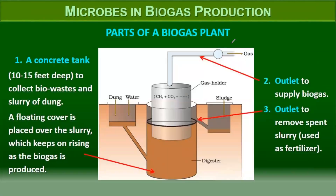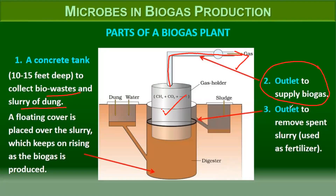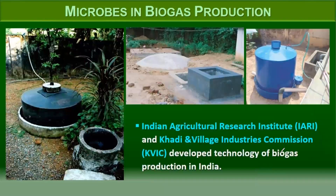The collection tank gathers biowaste and slurry of dung. A floating cover is placed over the slurry, which rises as biogas is produced. There is an outlet for the supply of biogas and another outlet to remove the spent slurry, which is used as a fertilizer in farms. The Indian Agricultural Research Institute (IARI) and the Khadi and Village Industry Commission (KVIC) developed technology for biogas production.